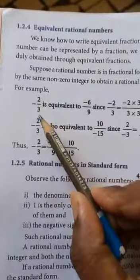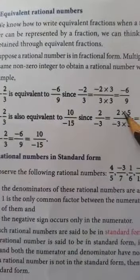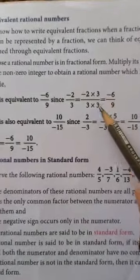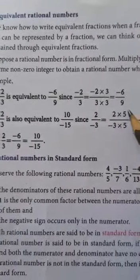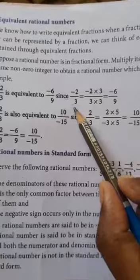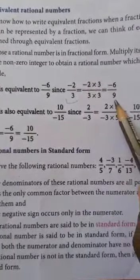See minus 2 by 3. We have to multiply this by 3. So, 3 numerator and denominator also multiplied by 3 we have minus 6 by 9. The original number is minus 2 by 3 but we multiplied by 3 we get minus 6 by 9.